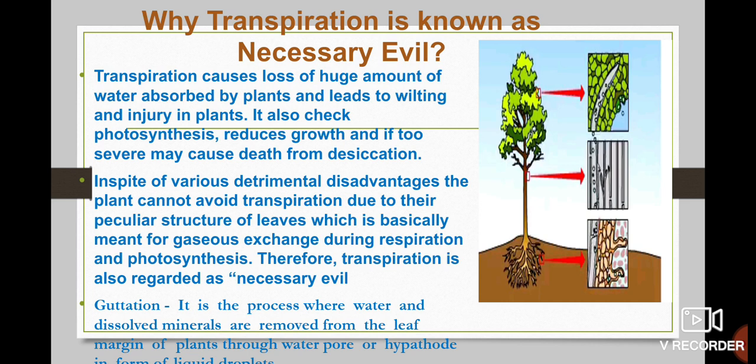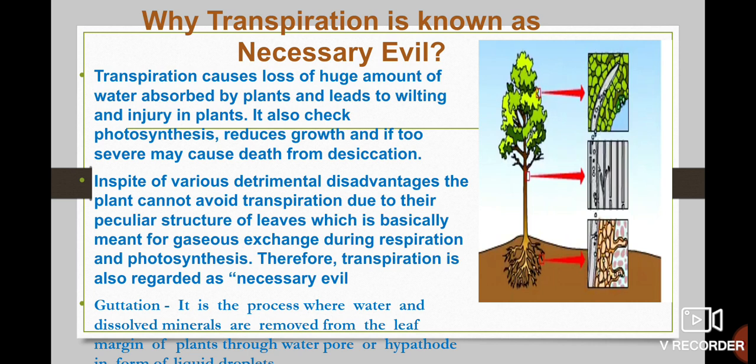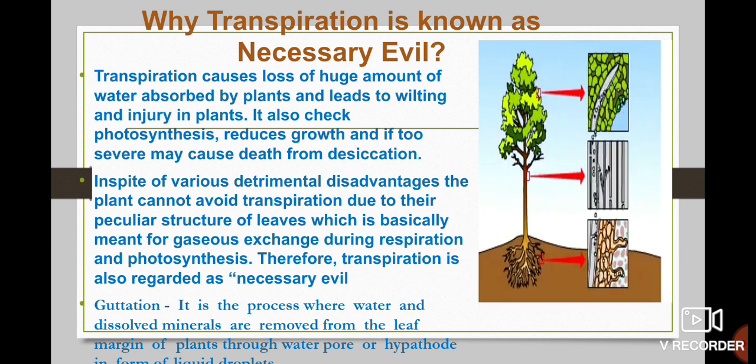Another term you need to know is guttation. It is the process by which water and dissolved minerals are removed from the leaf margin of a plant through water pores, also termed as hydathodes, in liquid state. It is simply the process where water and dissolved minerals accumulated around the leaf are removed from the leaf margin through the water pores.